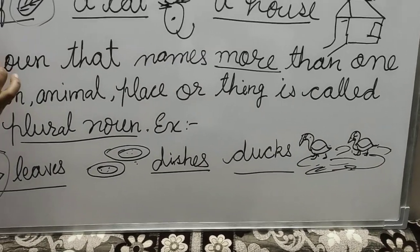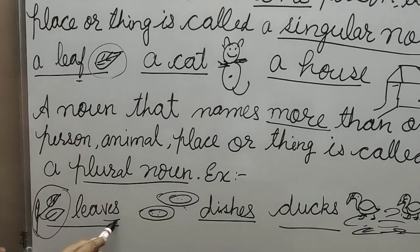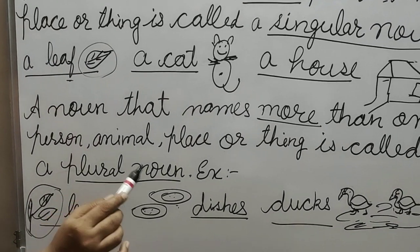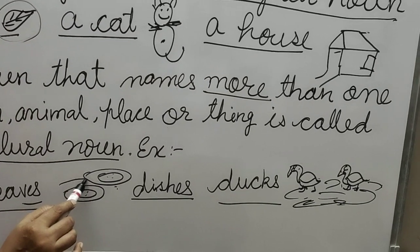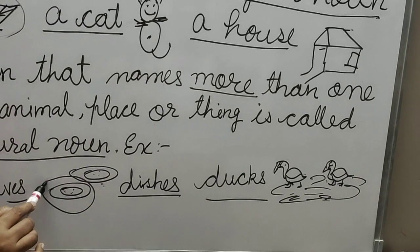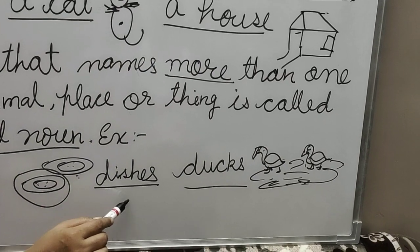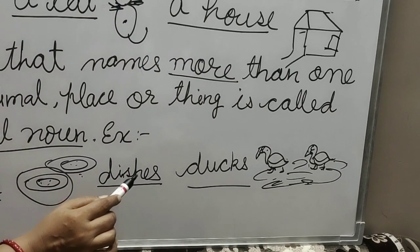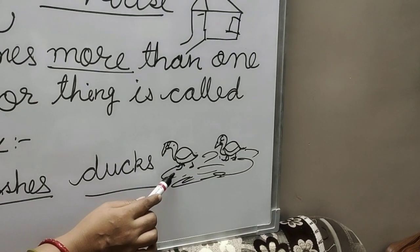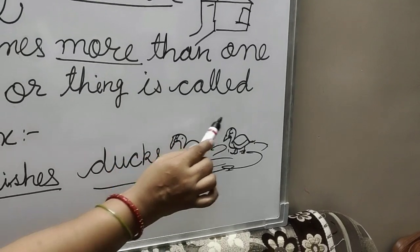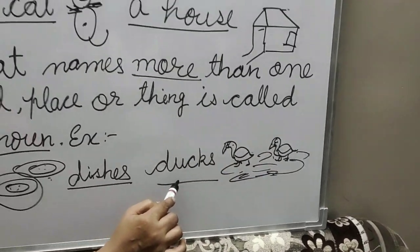So there are differences. F changes into VES. For example, dish — one dish is singular, and two dishes is plural. In the same way, duck — one duck is singular, and more than one duck is called ducks, which is plural.